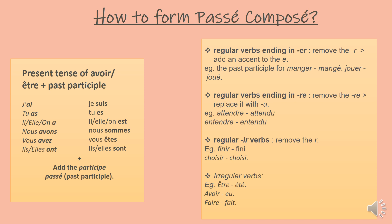For irregular verbs, there are always some exceptions in French — you'll have to remember all these irregular verb past participles. The most common ones are être, avoir, and faire. With être, the past participle is été. With avoir, it's eu. And faire becomes fait.